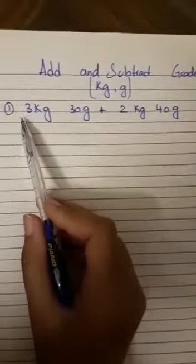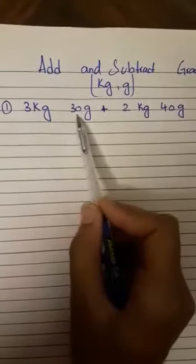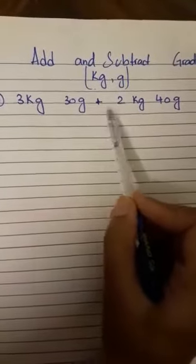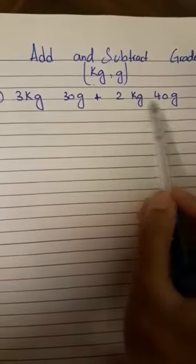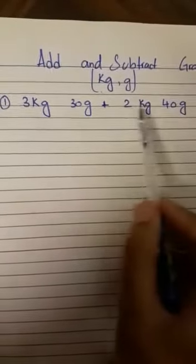Look at our first question. We have 3 kgs and 30 grams plus 2 kgs 40 grams. We have to add this equation.